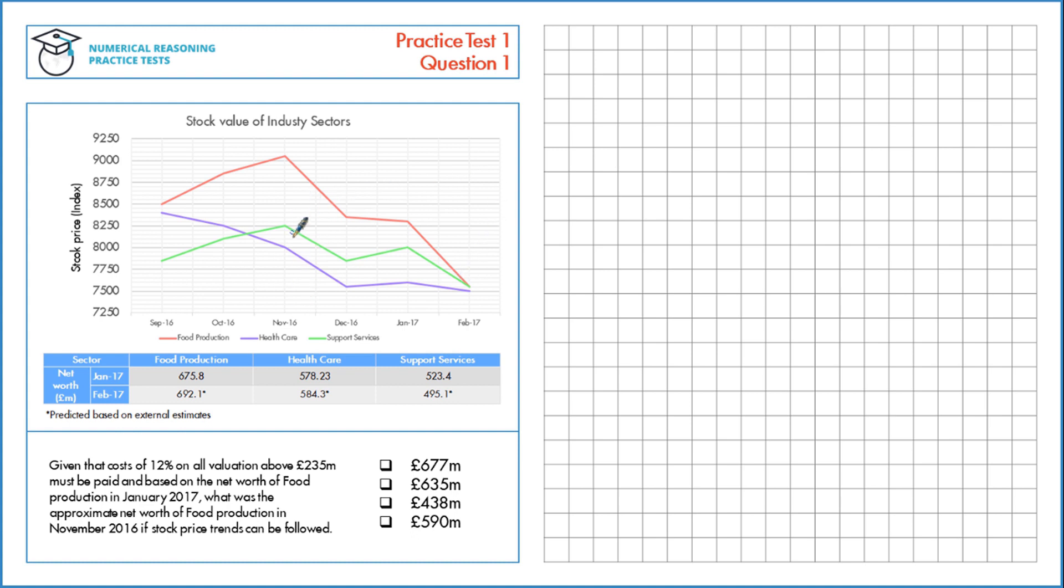First, let's look from November 16 to January 17. We need to use the change in stock price to estimate the value of food production. The January stock price is $8,300. Subtract the November price and divide by the November price, then multiply by 100, which gives us negative 8.3% or an 8.3% decrease.